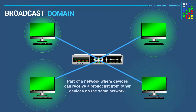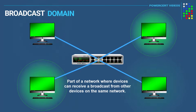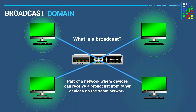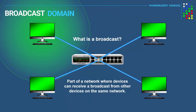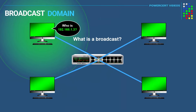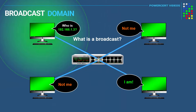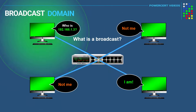A broadcast domain is part of a network where devices can receive a broadcast from other devices on the same network. Whenever a device wants to communicate with another device on a network, it first sends out a broadcast, and all the devices on the same network will receive it. The reason for the broadcast is so a device can locate the specific device that it wants to communicate with. Whether the devices are connected to a hub or a switch, it makes no difference, because both hubs and switches will forward broadcasts.